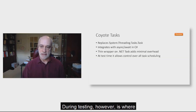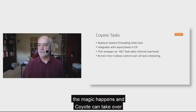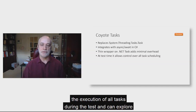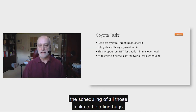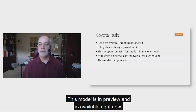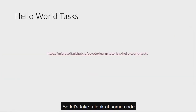During testing, however, is where the magic happens. Coyote can take over the execution of all tasks during the test and can explore various different interleavings between the scheduling of all those tasks to help find bugs. This model is in preview and is available right now. Let's take a look at some code that uses the task programming model.